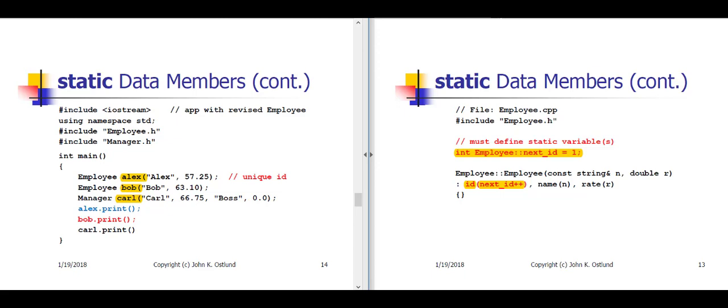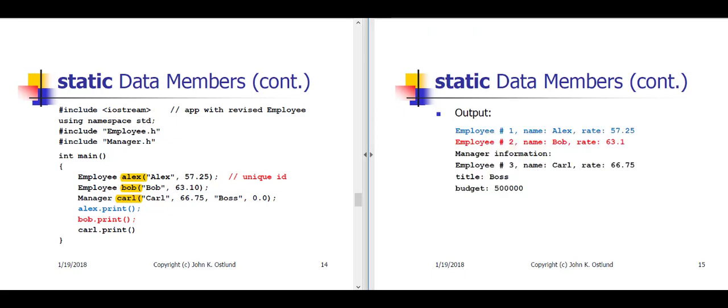When we run the program, the output is shown on slide 15. Alex.print invokes the employee print function, printing employee number 1, name Alex, rate 57.25. Bob.print also invokes the employee print function: employee number 2, name Bob, rate 63.1. Carl.print invokes the manager print function, because we overrode the print function in the manager class. So we get manager information containing the employee information: employee number 3, name Carl, rate 66.75, followed by the title and budget for Carl.